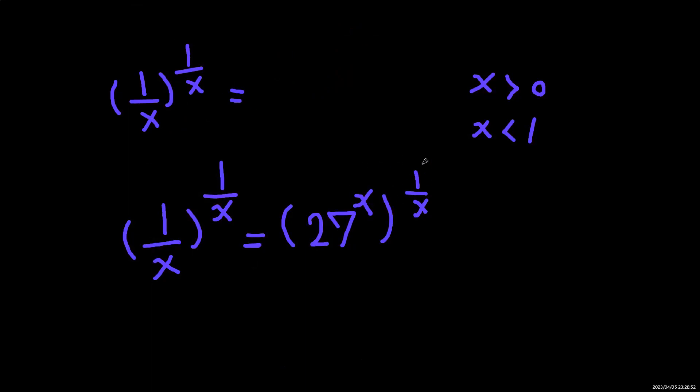It will be 27 to the power of X multiplied by 1 over X. So we will have (1/x) to the power of (1/x) equals 27 to the power of X times 1 over X, which equals 27 to the power of 1.